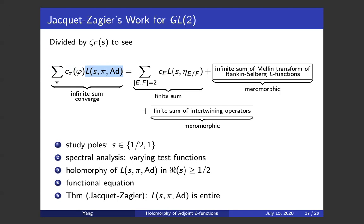By varying test functions, we will eventually get the holomorphicity of adjoint L-functions in this right half plane. Then we apply the functional equation — with respect to the Eisenstein series — so that we can get the analytic continuation of the adjoint L-function to the whole complex plane. Then we recover Zagier's result — namely, the adjoint L-function is entire. There are many subtle technical issues. For example, the infinite sum convergence is problematic. So if you want to generalize this approach to the higher-rank case, it's quite involved, and there are many other unexpected terms showing up. We will talk about that next Wednesday.